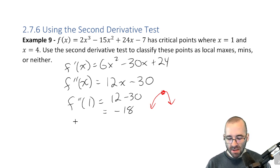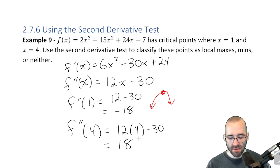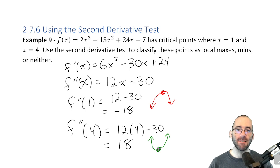Similarly, the second derivative at 4, well, that's going to be 12 times 4 minus 30. That's going to be a positive 18. Great. That's positive. Concave up. We know what that point looks like.